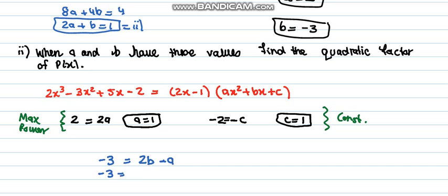So -3 minus a is 1. So the value of b would become 2b equals -2.